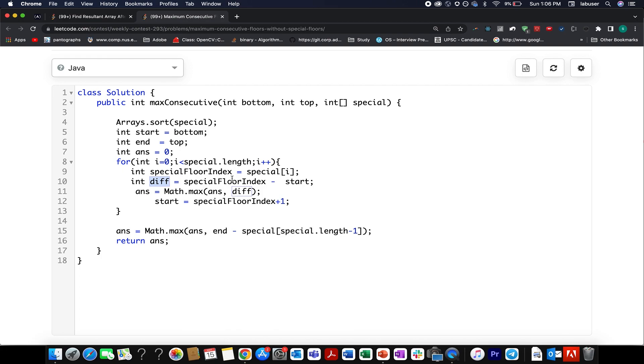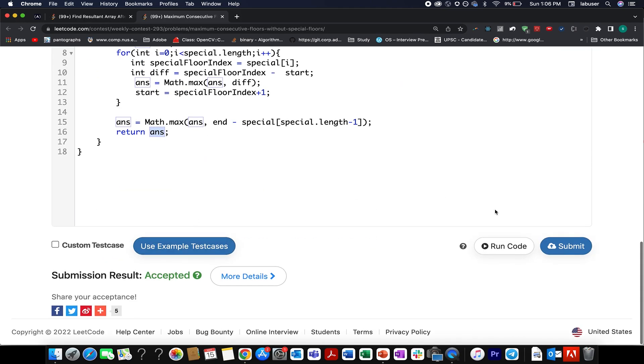And I calculate the difference between the special floor index minus start. Once I have that diff, I compare it with my answer variable: ans equals to max of ans, comma diff. And along with this, I am updating my start to special floor index plus one. So this is very important. Once I'm done with this, I have to consider another corner case, which is end minus the last value in my special array. So I compare the answer with this value and I select the maximum one. Once I'm done with this, I return the ans value. So let's try this up.